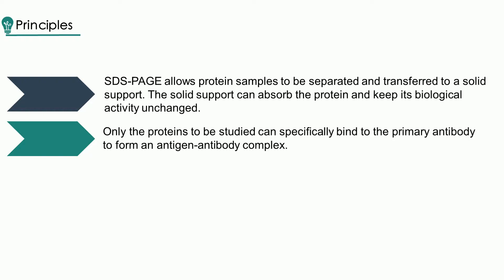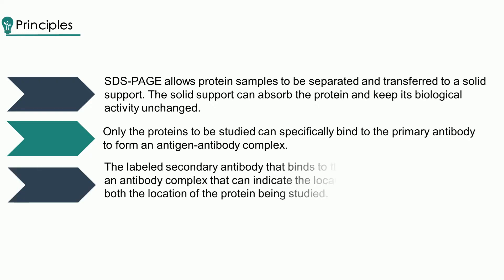After the primary antibody is washed and removed, only the position of the target protein remains bound to the primary antibody. The primary antibody-treated membranes are then treated with a labeled secondary antibody after washing. The labeled secondary antibody that binds to the primary antibody forms an antibody complex that can indicate the location of the primary antibody, and thus the location of the protein being studied.